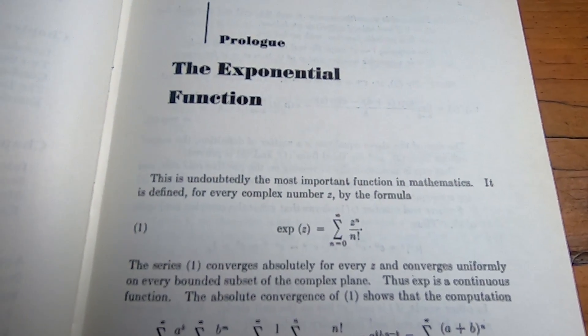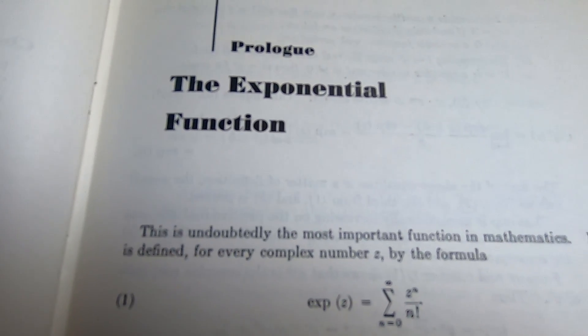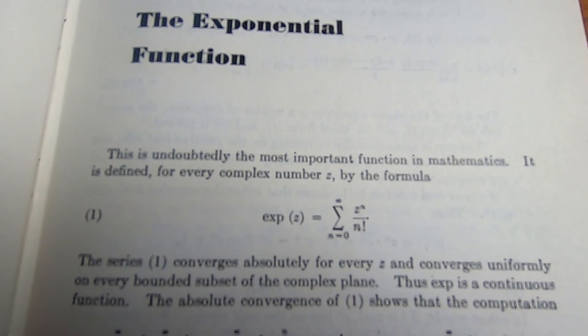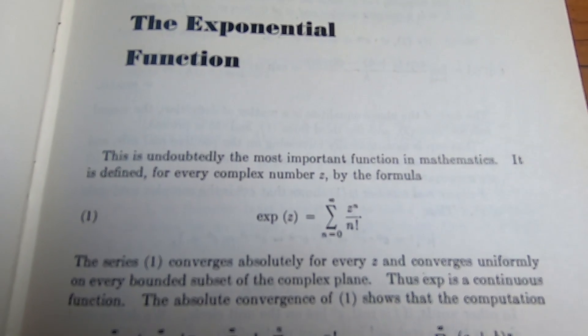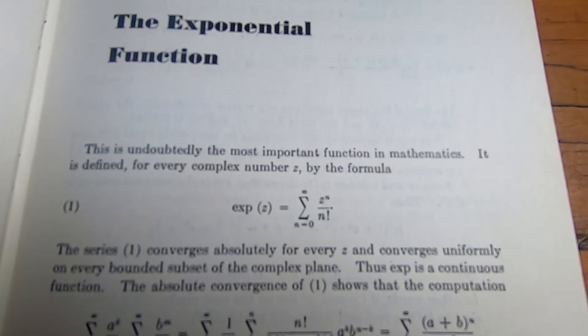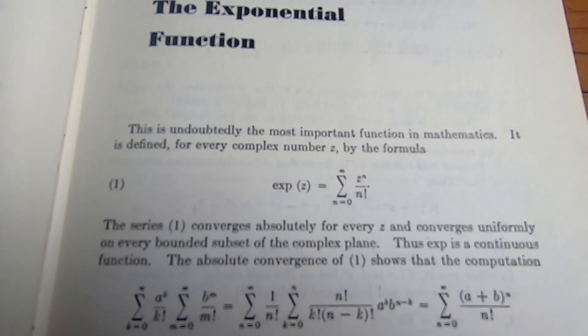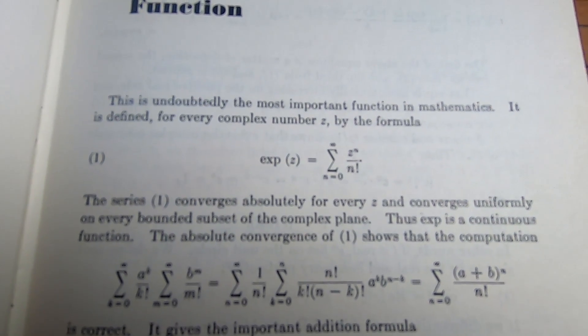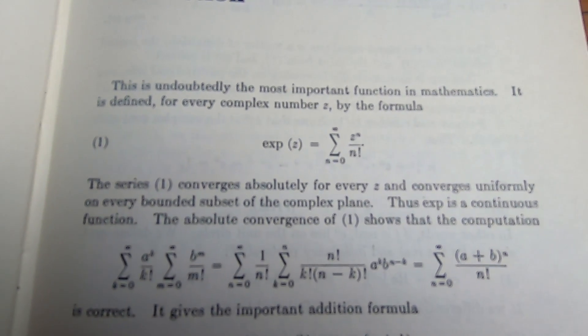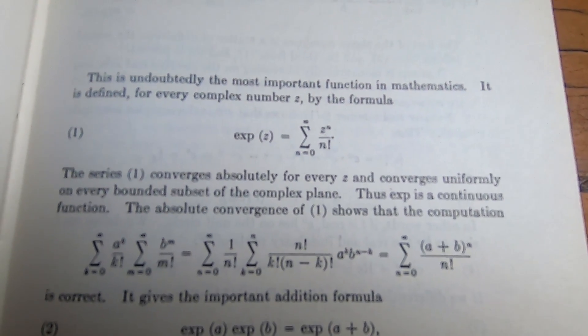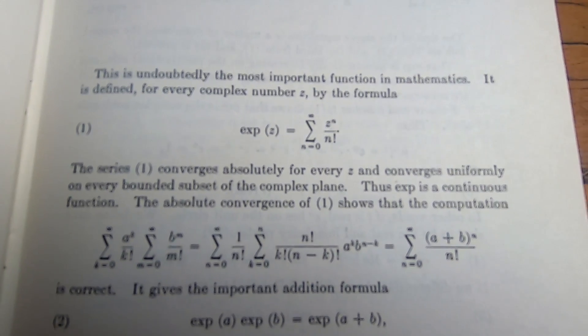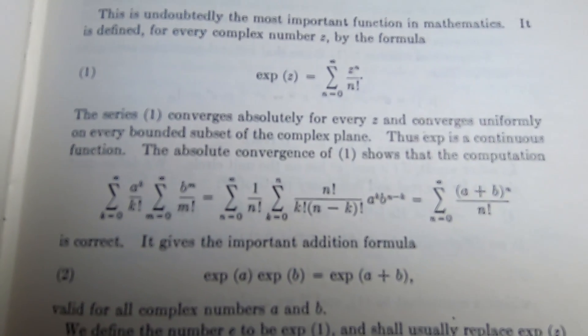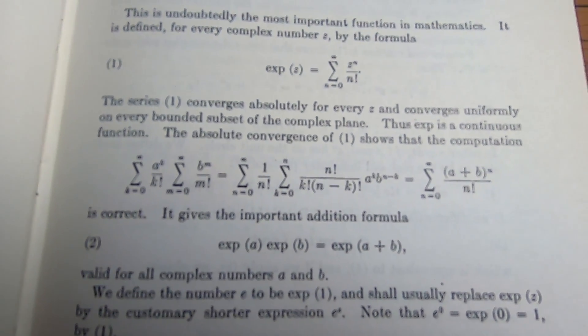So when you first open this book and you read the prologue, it's just so cool. The exponential function. This is undoubtedly the most important function in mathematics. It is defined for every complex number z by the formula. And it gives you the power series representation of the exponential function. This is the McLaurin series. And it converges absolutely for every complex number z and uniformly on every bounded subset of the complex plane. Thus, the exponential function is continuous. The absolute convergence of this series show that the computation. And they give you a little computation here. And it tells you it gives the important addition formula.